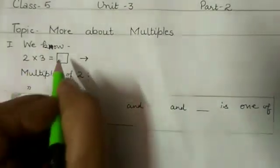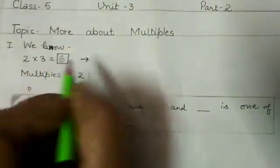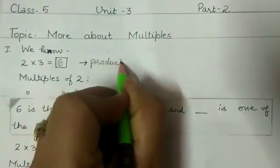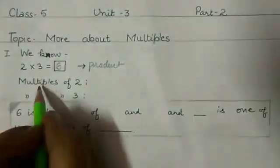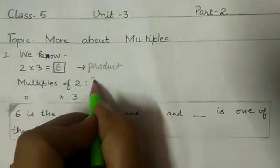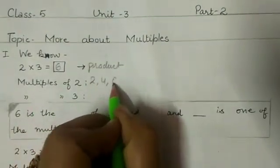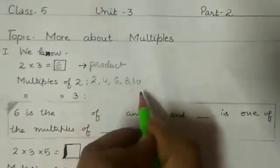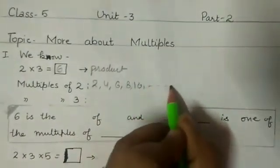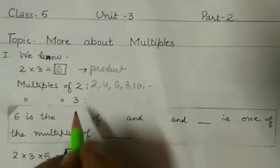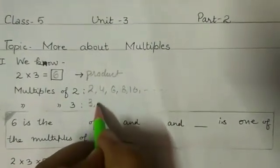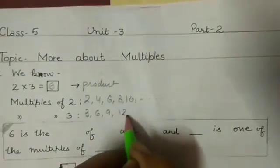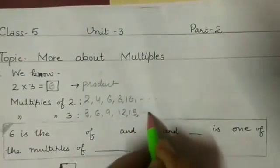We all know that 2 3's are 6, that is the product of 2 and 3 is 6. Now let us write the multiples of 2: 2, 4, 6, 8, 10 and so on. Now let us write the multiples of 3: 3, 6, 9, 12, 15 and so on.